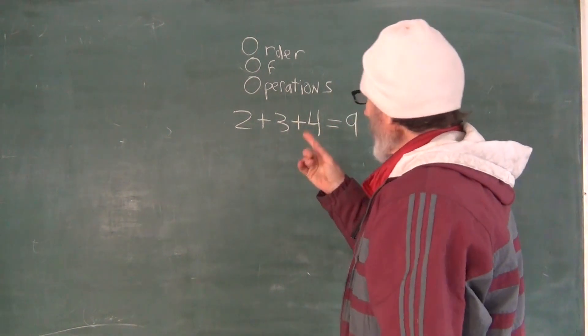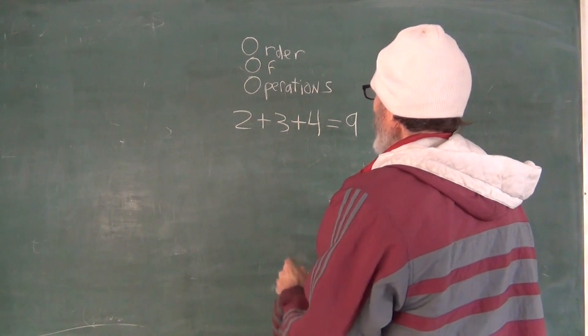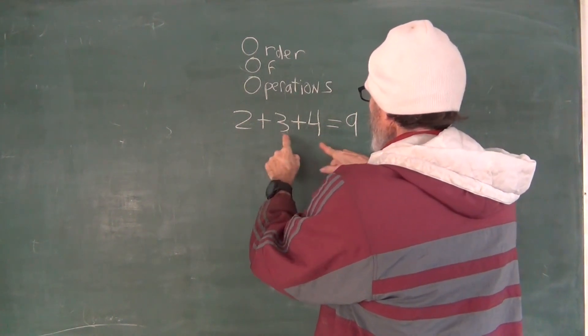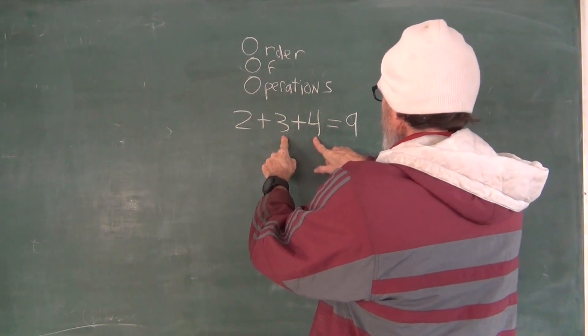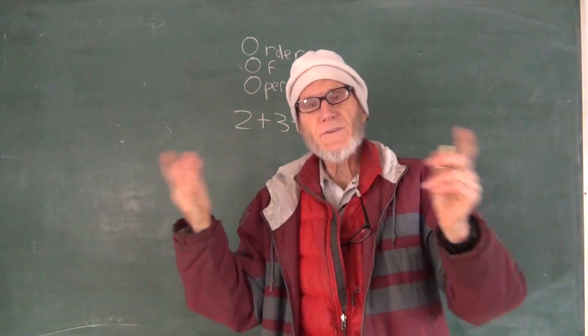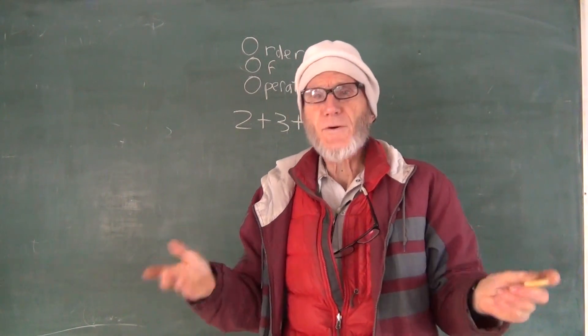Now, it doesn't matter whether or not we say two plus three is five and then four is nine, or if we say three plus four is seven plus two is nine. It always works out. So no matter which order you do it in, the operation order doesn't matter.